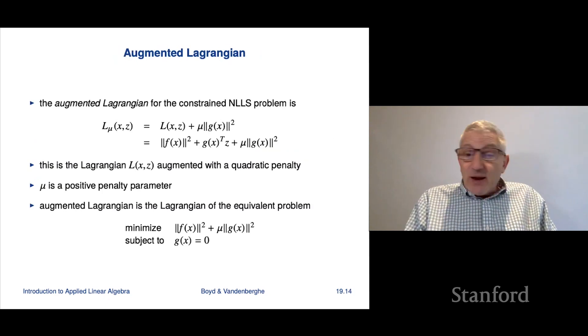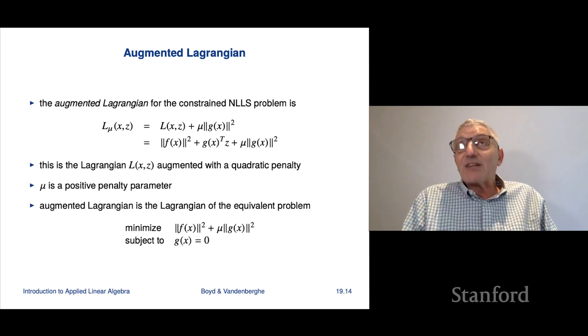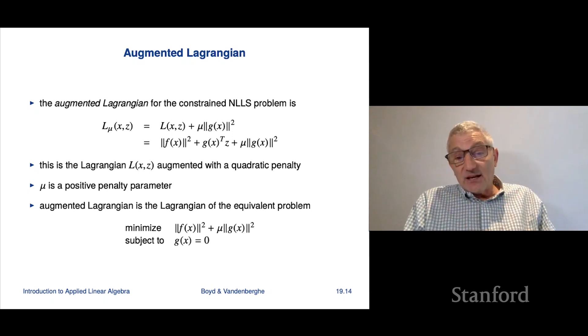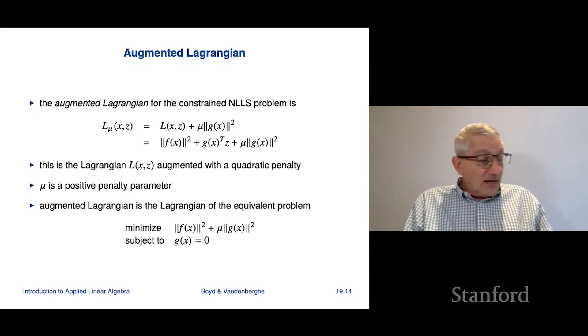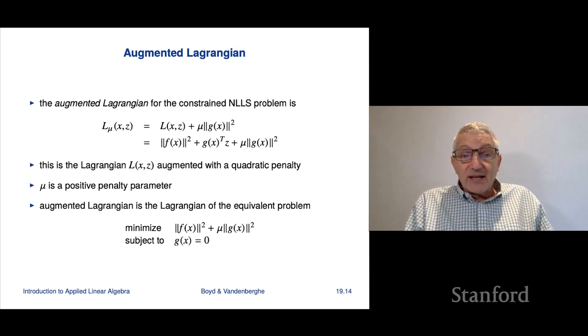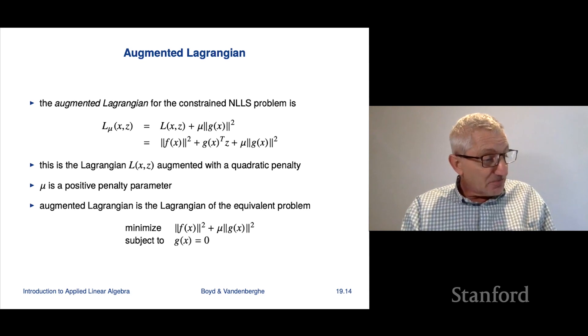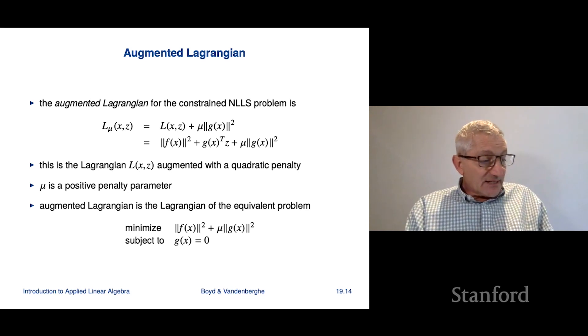So to correct that, we're gonna show a method that is actually just a minor modification of the penalty method, that keeps another vector around and updates it in a different way. And it actually doesn't suffer from that drawback of the penalty method. So here's what it is.